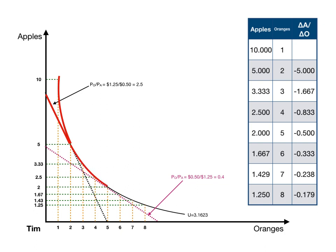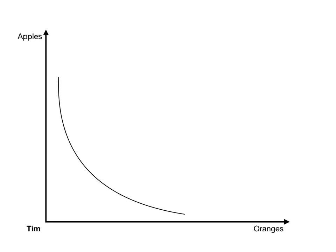Below the point of five apples and two oranges, the indifference curve is now flatter. Tim is not willing to give up anything near two and a half apples for an additional orange — he's willing to give up less. The market requires he give up two and a half apples for an additional orange, but he's not willing to beyond two oranges and five apples. So Tim's maximum efficiency is to stop at five apples and two oranges, given that the price of oranges is $1.25 and the price of apples is $0.50.